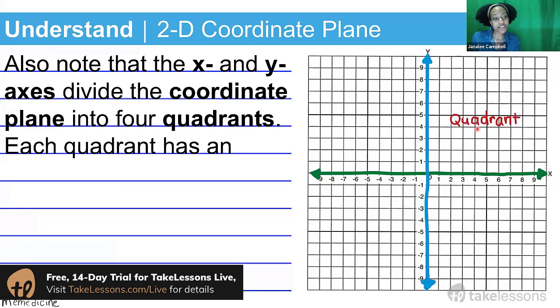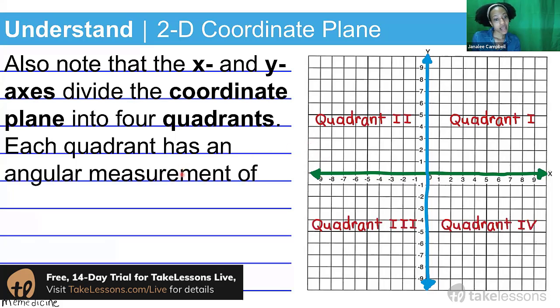Each quadrant has an angle measurement of 90 degrees. Take note of the 90 degree measurement in each quadrant because we're going to need to understand this when I show you how to do a rotation.